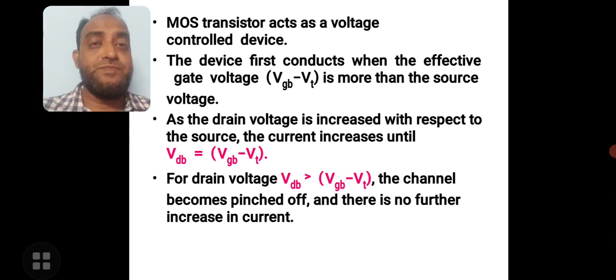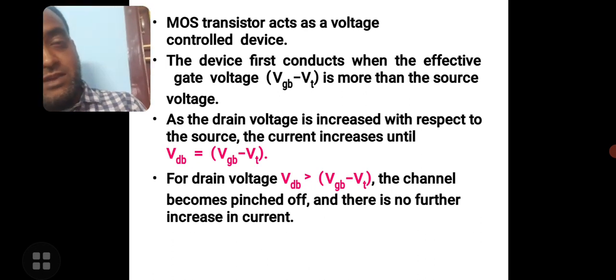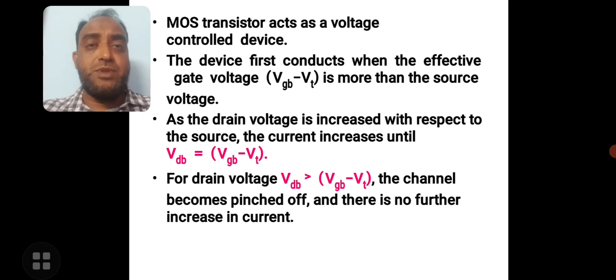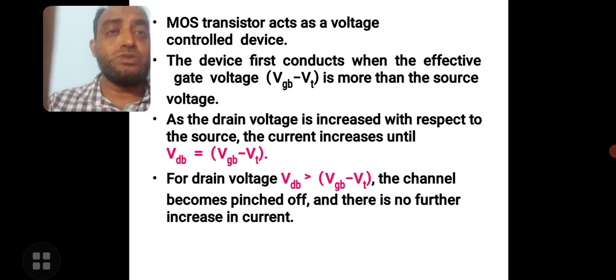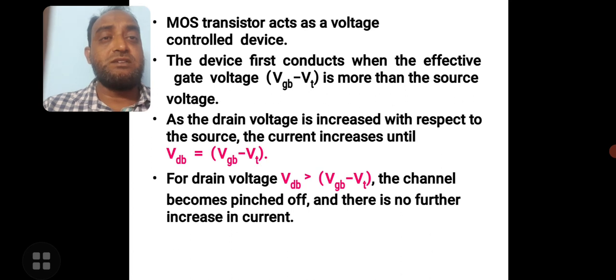MOS transistor, hence it can be concluded that a MOS transistor can act as a voltage control device. Why? Because even though the channel current is controlled by the gate voltage, gate voltage along with drain and source potential. Wherever we are talking about the operation, we always have to talk about the voltages. So MOS transistor acts as a voltage control device.